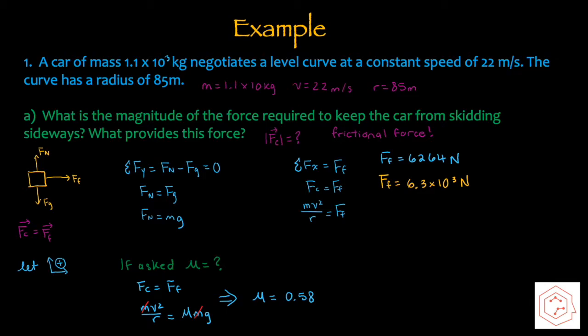Letting upwards and the horizontal direction that friction acts in be positive, and solving for net force in the x-component, that's just equal to the frictional force. So Fc equals Ff. We know that centripetal force is mv squared over r, which uses all the variables given to us. Plugging those numbers in, we get that the frictional force is 6.3 × 10³ N.